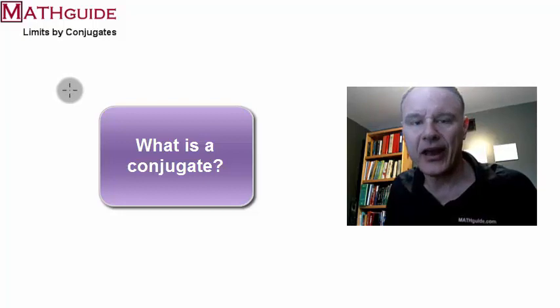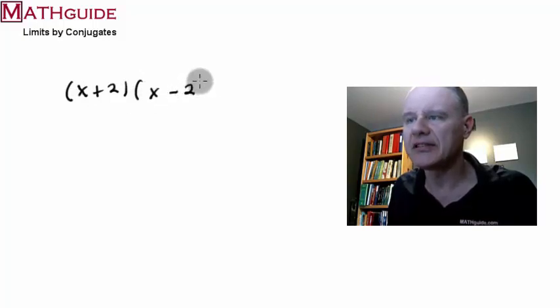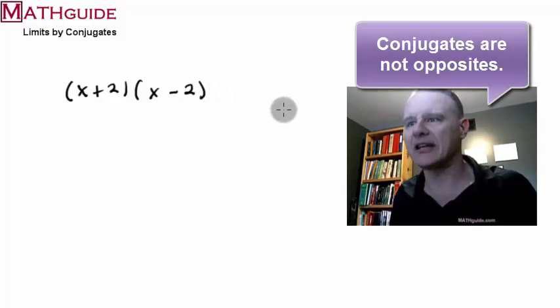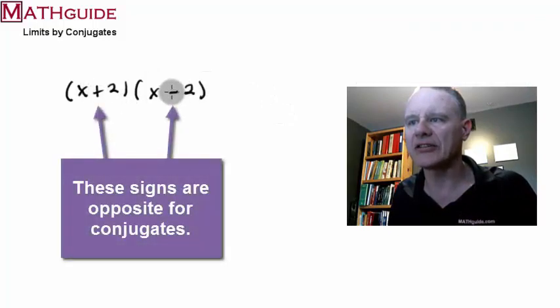So let's say that we had a binomial like x plus 2. And if we were to take this binomial and we were to multiply it by its conjugate, well, what's a conjugate? A conjugate is not quite the opposite. You'll notice that the only thing that is the opposite is the middle. So here it started out being a plus, now it's a minus.